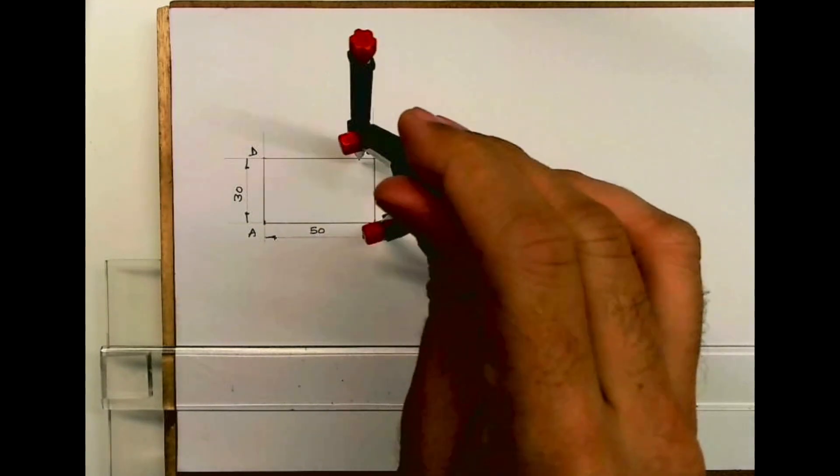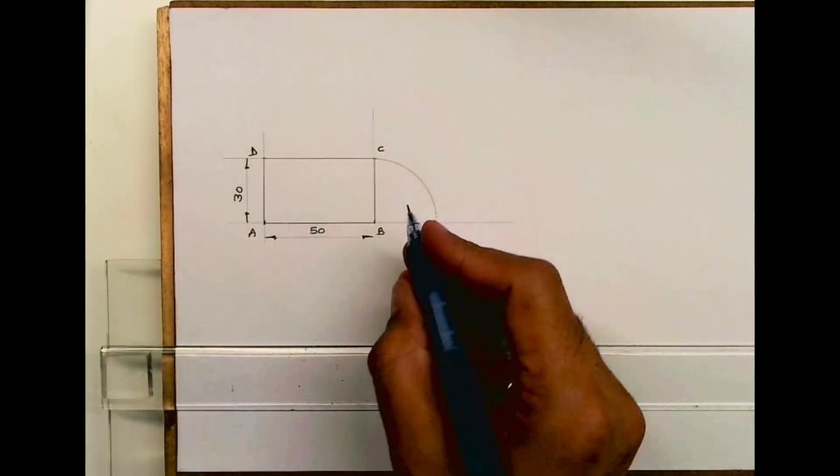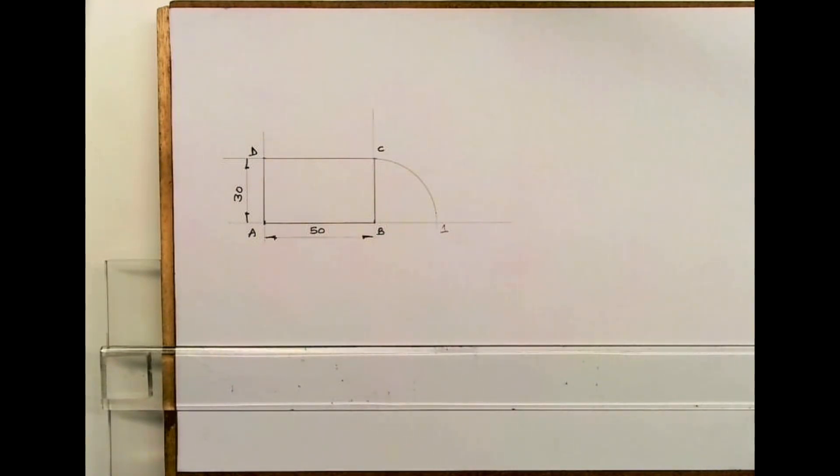First we'll draw a rectangle, then we'll take side BC and rotate it like this. You'll get point 1, so BC equals B1.